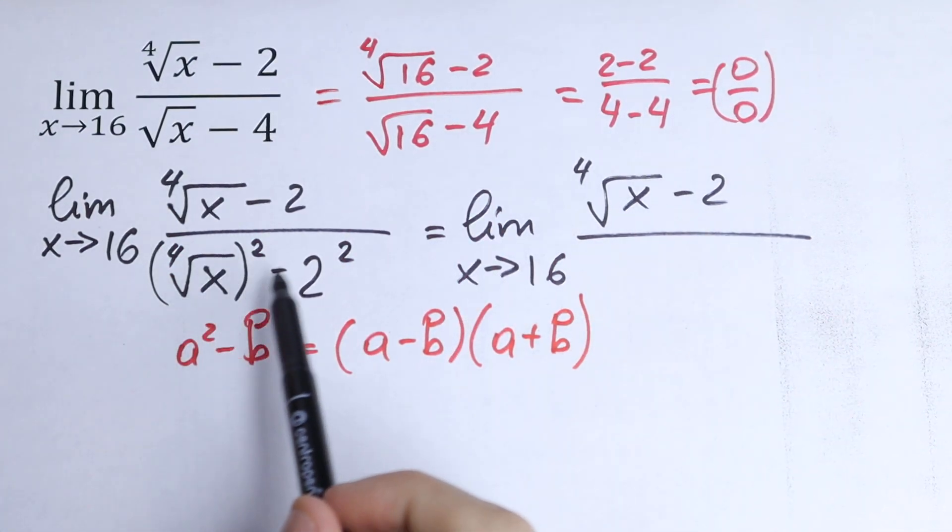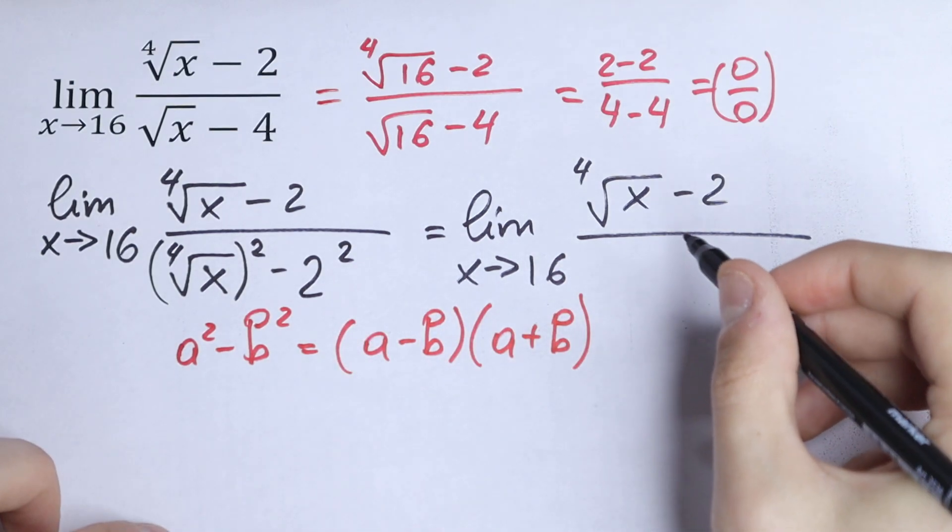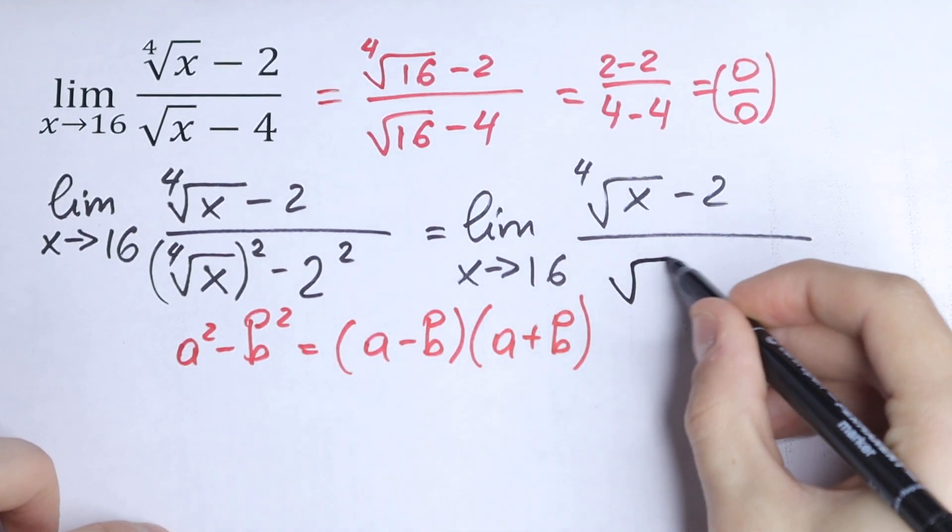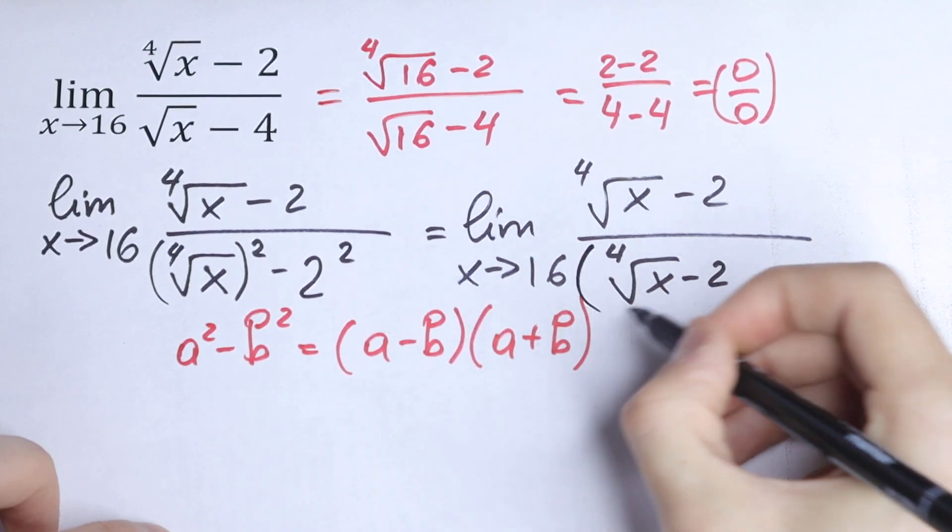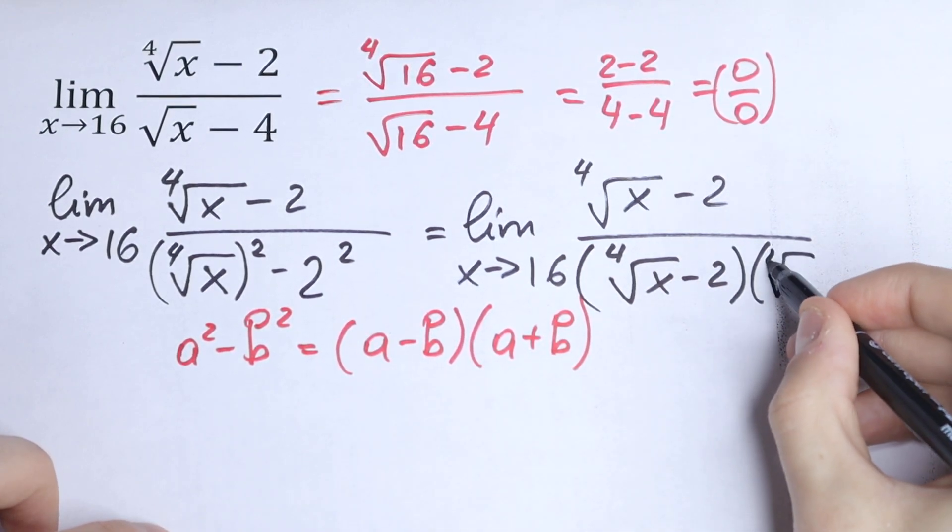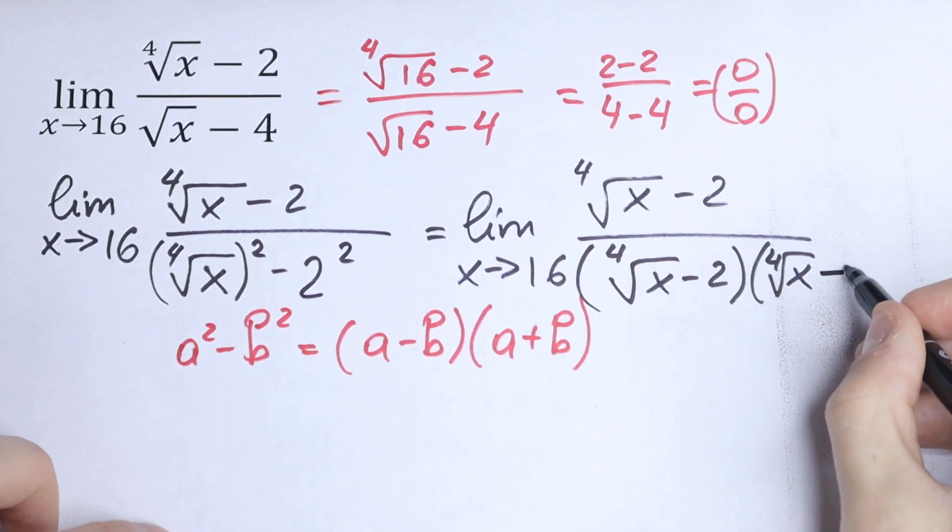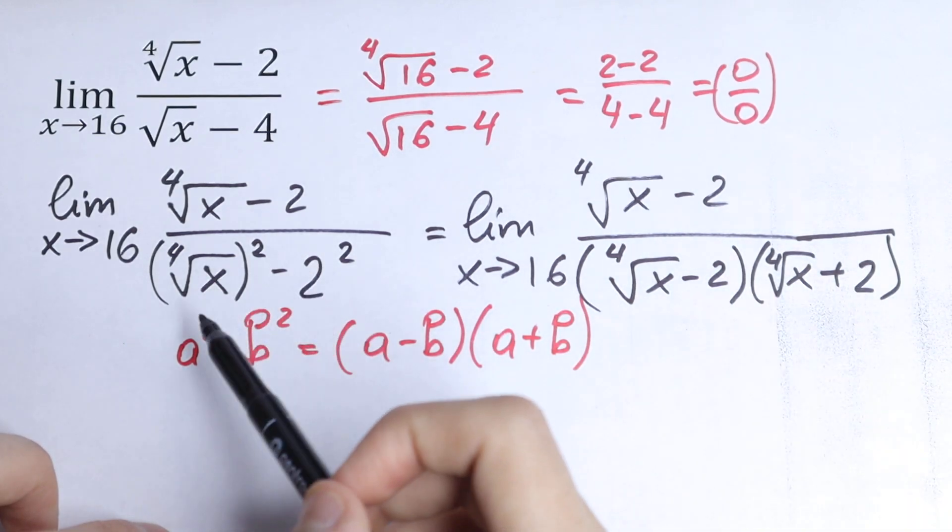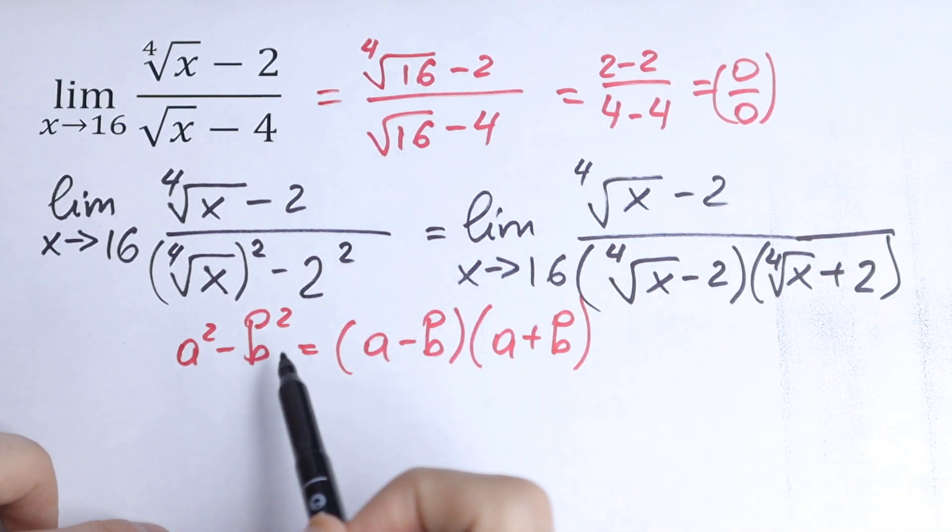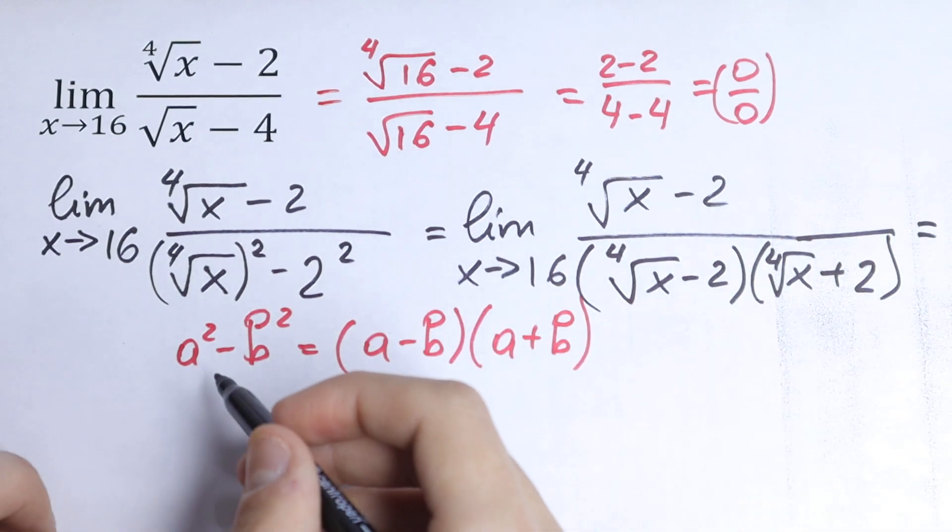So this will be our a, this will be our b, and we split it into an identity, so we will have fourth root of x minus 2 times fourth root of x plus 2. This will be our conjugate, created using the formula. This will be equal to limit x approaches 16.